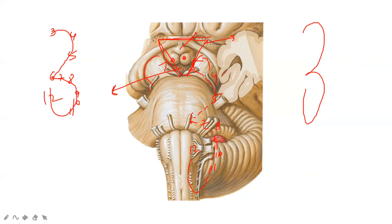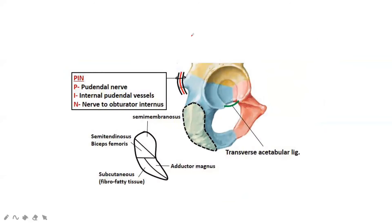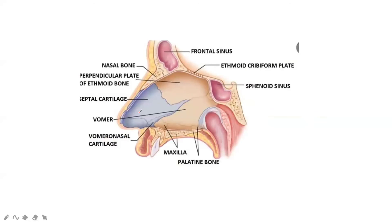This is the muscle attachment for the ischial tuberosity. Remember: semimembranosus, semitendinosus, and biceps femoris share a common point, along with adductor magnus. The structures related to the ischial spine are the pudendal nerve, internal pudendal vessels, and the nerve to obturator internus.